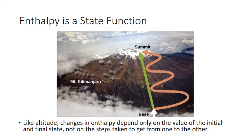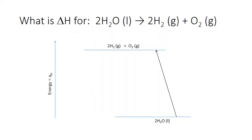In the same way, changes in enthalpy for chemical reactions only depend on the differences in enthalpy of the products and the reactants, not on how the reactants combined or the different steps taken to get from reactants to products. Say that we wanted to know the enthalpy change for the decomposition of liquid water into hydrogen and oxygen gas. We could achieve this change in either one step or two. In one direct step, we could break apart a molecule of liquid water into hydrogen and oxygen and measure the heat required.